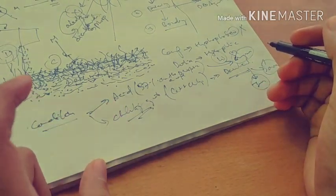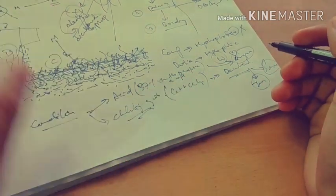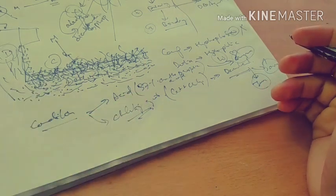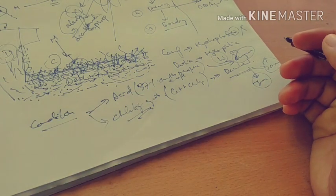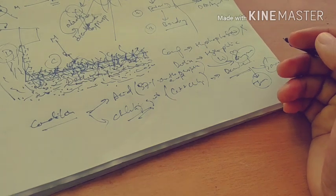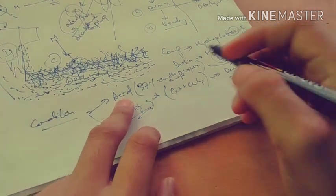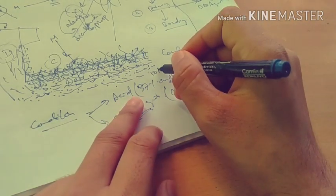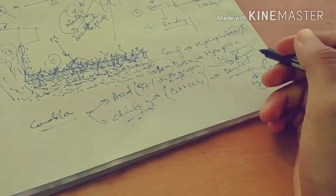The most commonly used acid for conditioning is 37% orthophosphoric acid, applied for 15 seconds. One more important question: if saliva contaminates the surface after conditioning or before bonding, in that case we do re-conditioning for 10 seconds more.